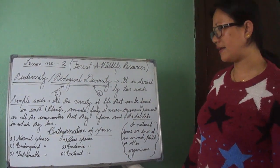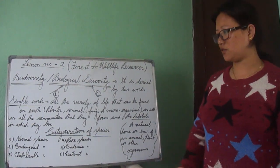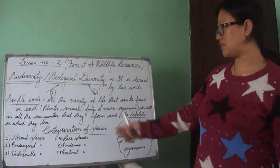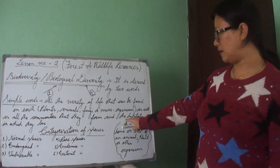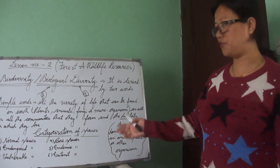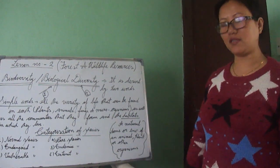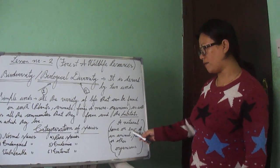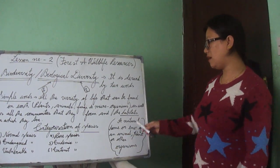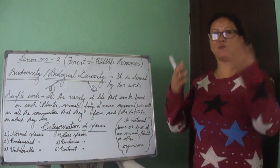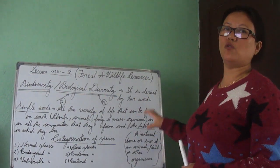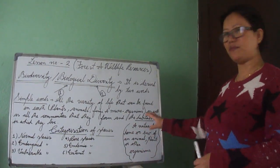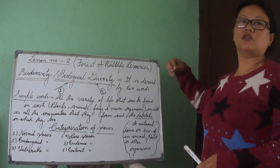Now we have some categories of different species present on Earth. Before moving to those, I've underlined the word 'habitat' from the definition of biodiversity. In simple words, habitat means a natural home or environment of an animal, plant, or other organism — the way people make homes, similarly the forest where animals live is known as habitat.